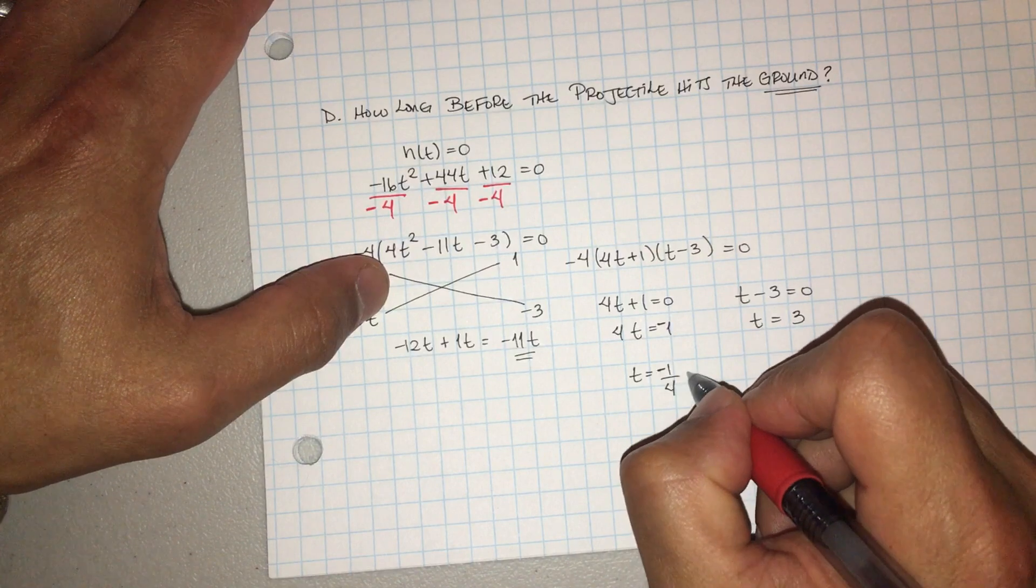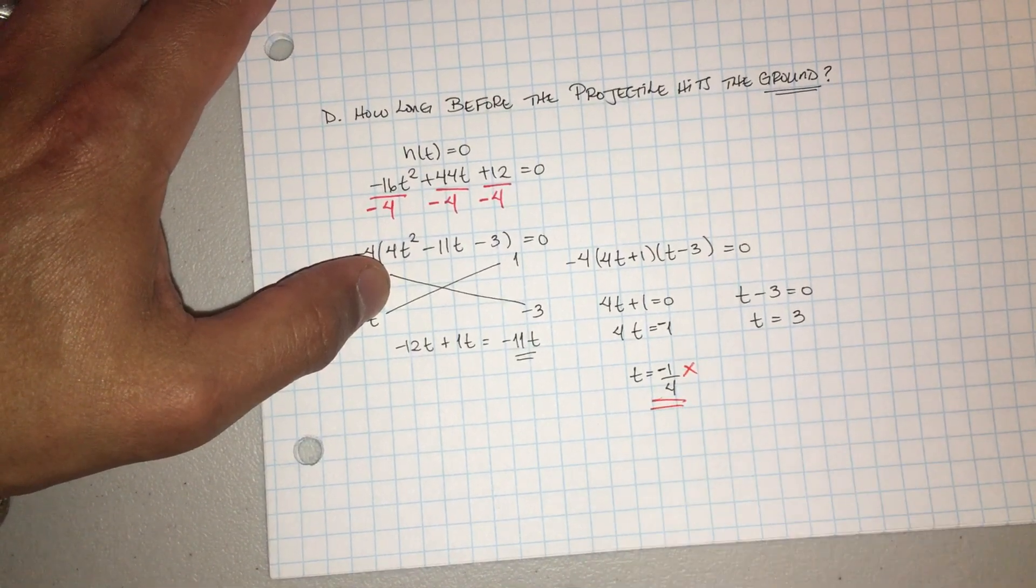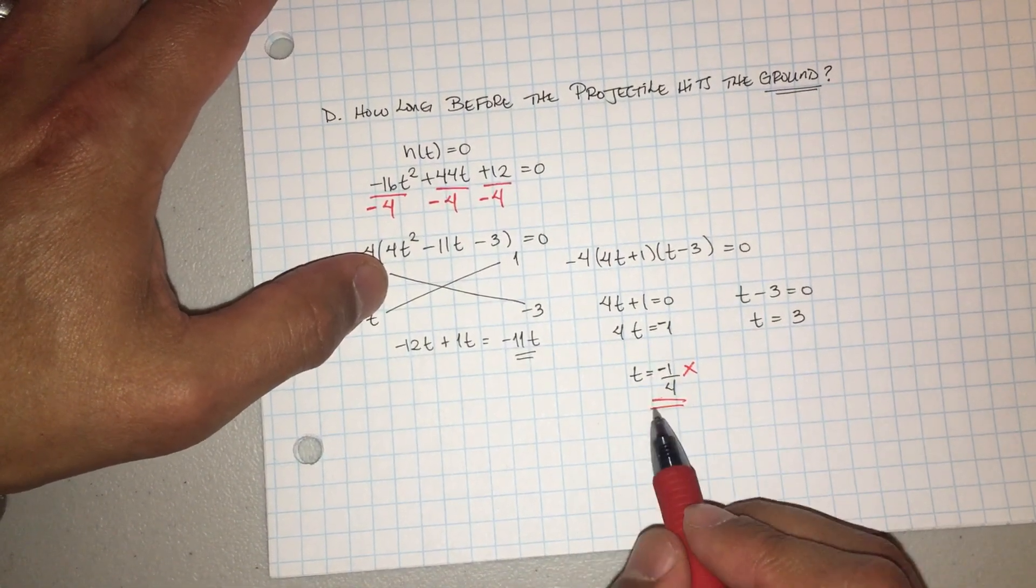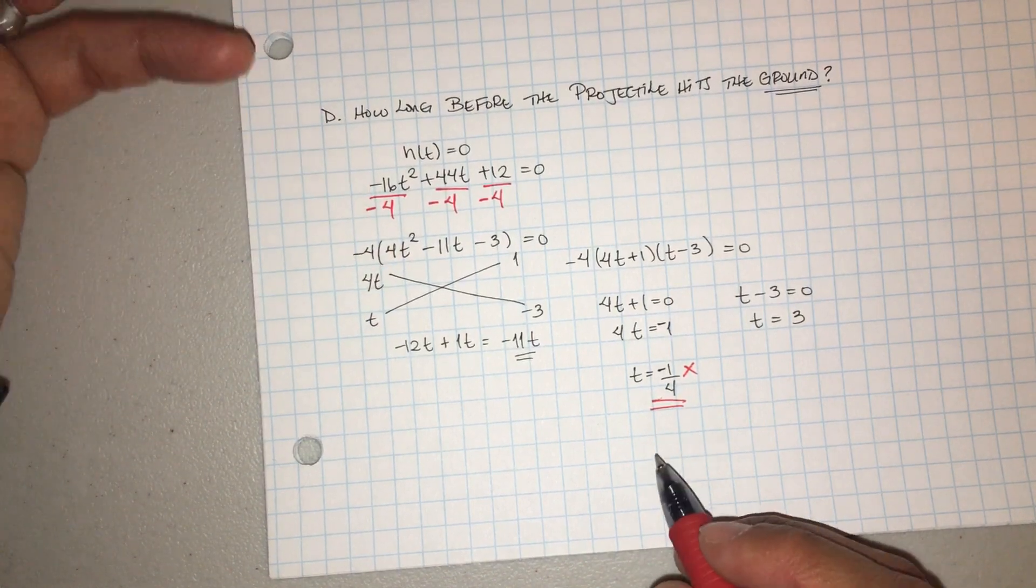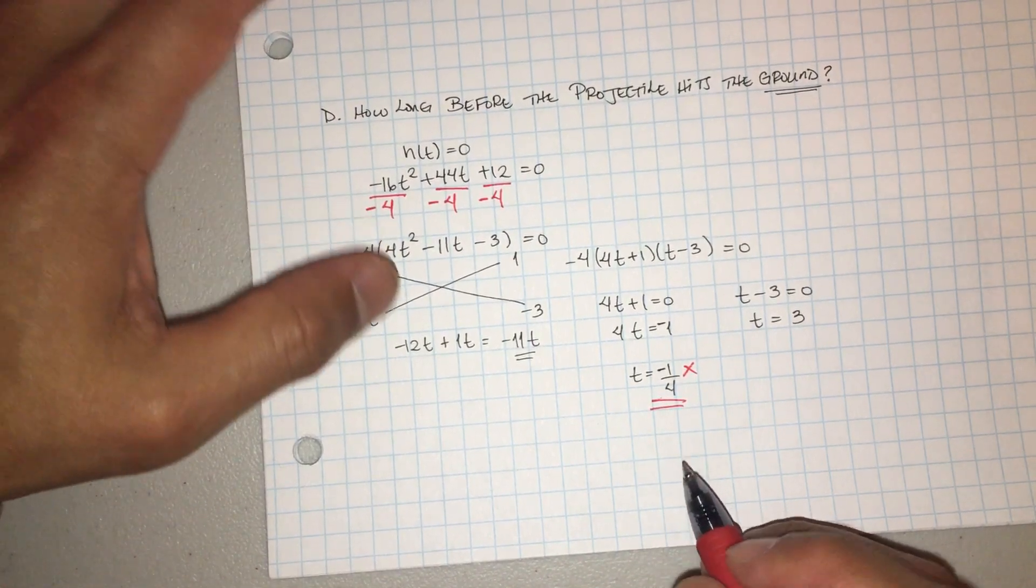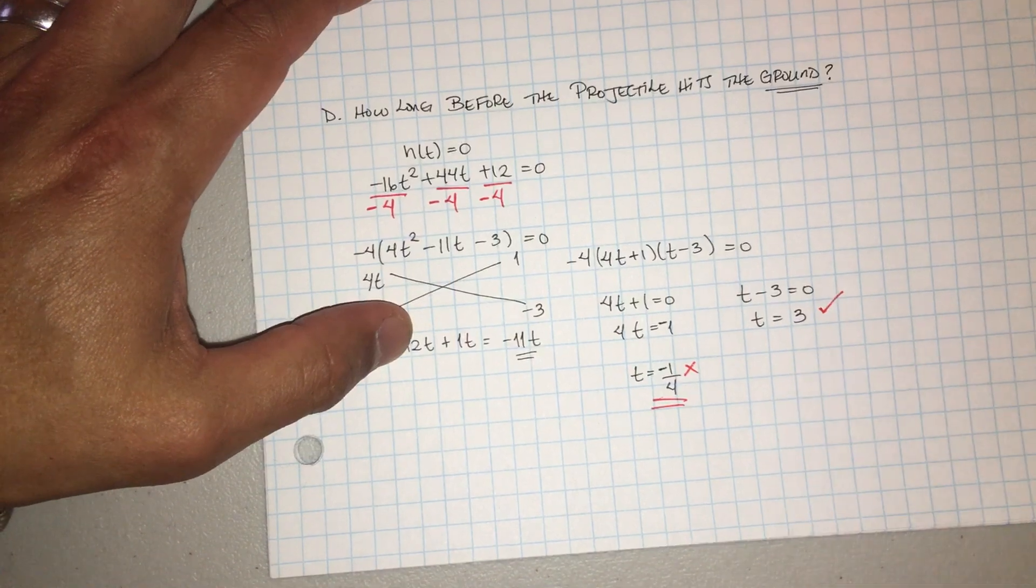Now remember, we're talking about a real life scenario, so this is, there's no way there's going to be one fourth of a second. No puedo, podemos tener un cuarto de un segundo negativo, porque en la vida real el tiempo no es negativo. So the answer is t equals three.